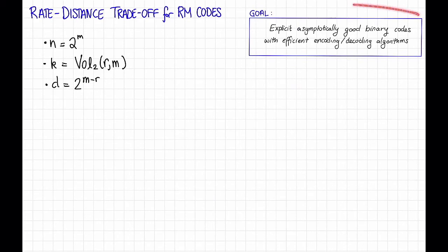So let's return to our goal that's been driving these past couple of videos. We want explicit asymptotically good binary codes with efficient encoding and decoding algorithms. Okay, so binary Reed-Muller codes are definitely explicit. I can tell you exactly what they are. They are binary, and if you believe me they do have efficient encoding and decoding algorithms. But are they asymptotically good?